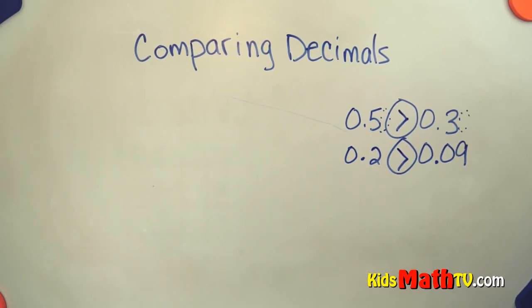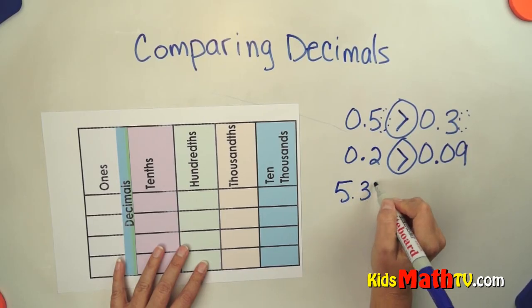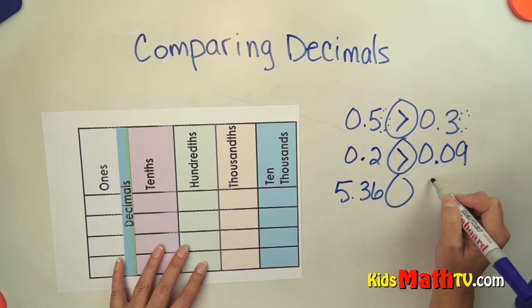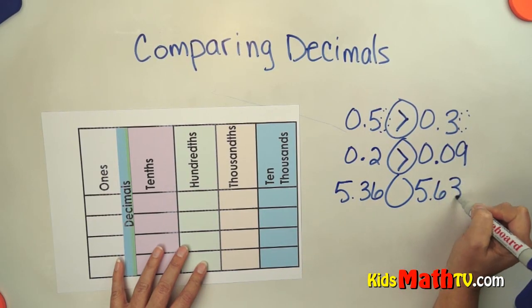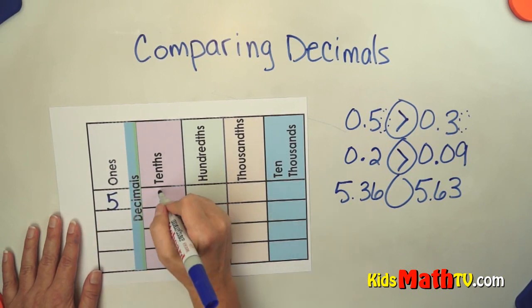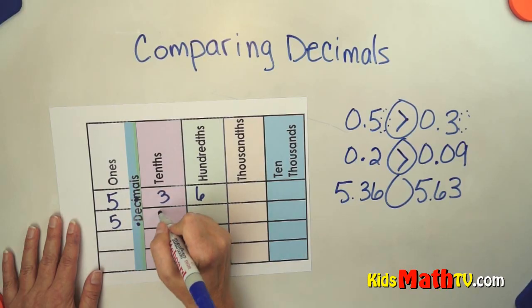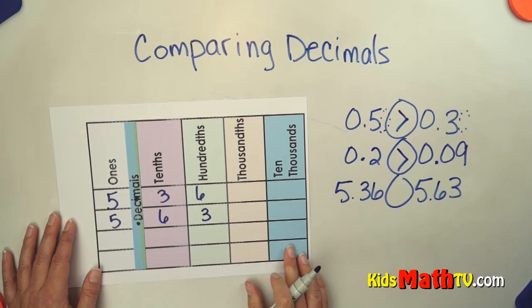Let's try a couple more. How about 5.36 compared to 5.63? We put the ones down first: decimal, 36 hundredths, and 5.63.